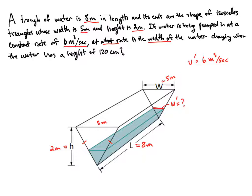So one thing we'll do next is use the fact that the end triangles here, so the triangle for this trough, this isosceles triangle, is going to be similar to this triangle here where the water is.